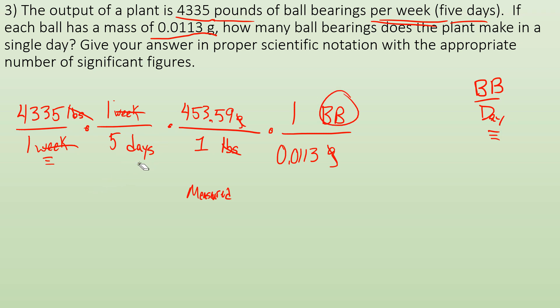So now, only now, will you pick up your calculator and plug in all these numbers. 4335 times 1 times 453.59 times 1 divided by 1 divided by 5 divided by 1 divided by 0.0113. And then you're going to have to round your answer in terms of sig figs. So this one has 4 sig figs. This one's an exact number. This one has 5 sig figs. And then this one only has 3 sig figs. So you're only going to want to keep 3 sig figs. And what you end up with is 3.48 times 10 to the 7 ball bearings per day.